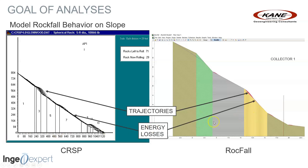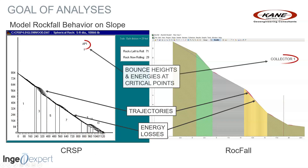The next thing we want to look at are energy losses. When the rocks bounce through the air, they're not losing energy. But when they hit the surface, they're losing energy, and that energy is lost in various modes: bouncing, frictional losses, and surface roughness. We also want to note the bounce heights and energies at critical points.